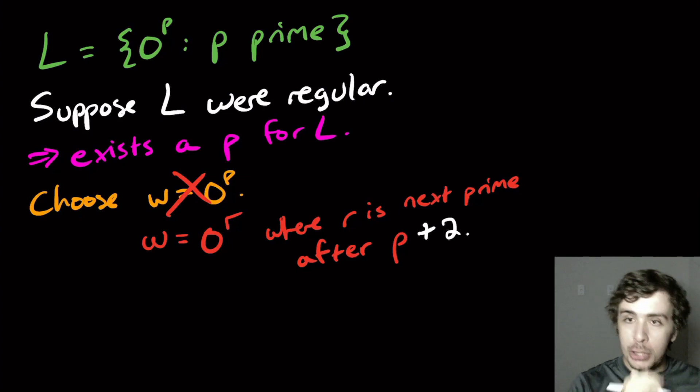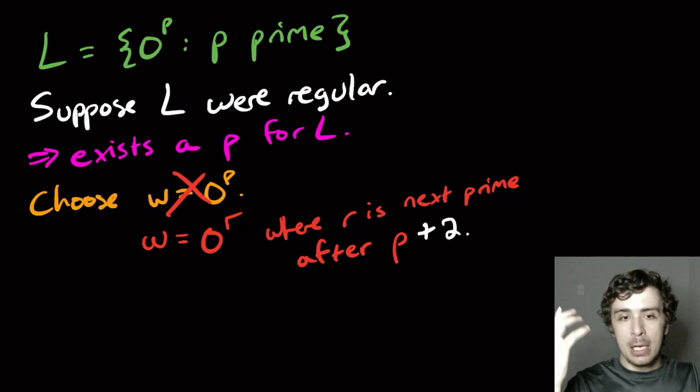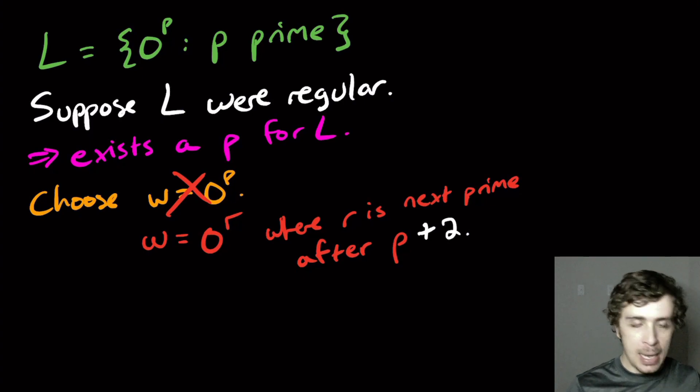Where does this plus two come from? It comes from we need to be able to exhibit two things that multiply to the string's length, and the way to do that is to break up the string in a nice way so that we have two things that are of both length at least two. So therefore the length of the string is not prime.